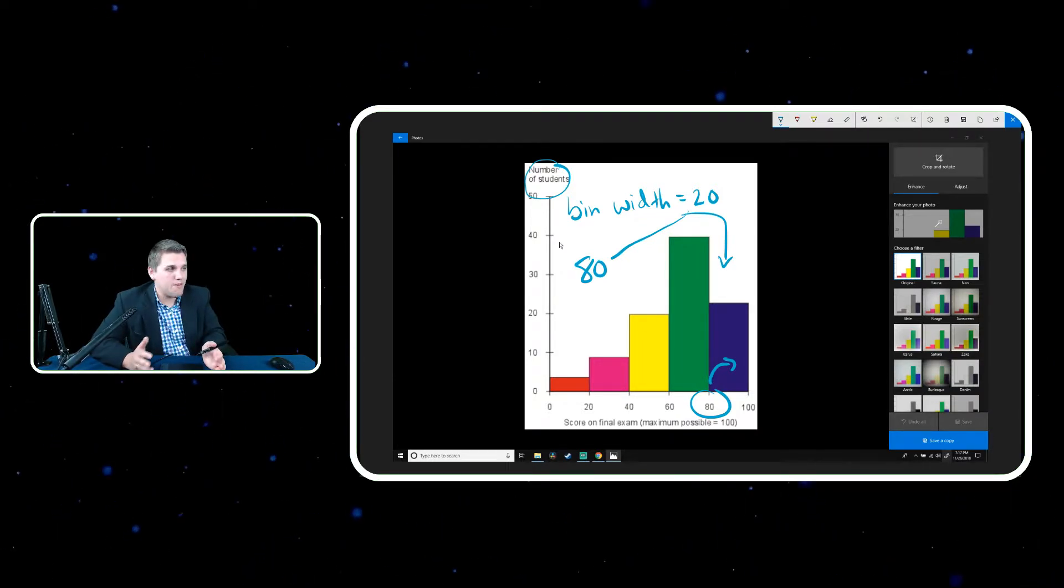So this is a histogram, and I want to go through one more example with you guys so that you get a better understanding of how to draw a histogram. I don't think there's anything else. Sometimes, by the way, they'll use the phrase class width.